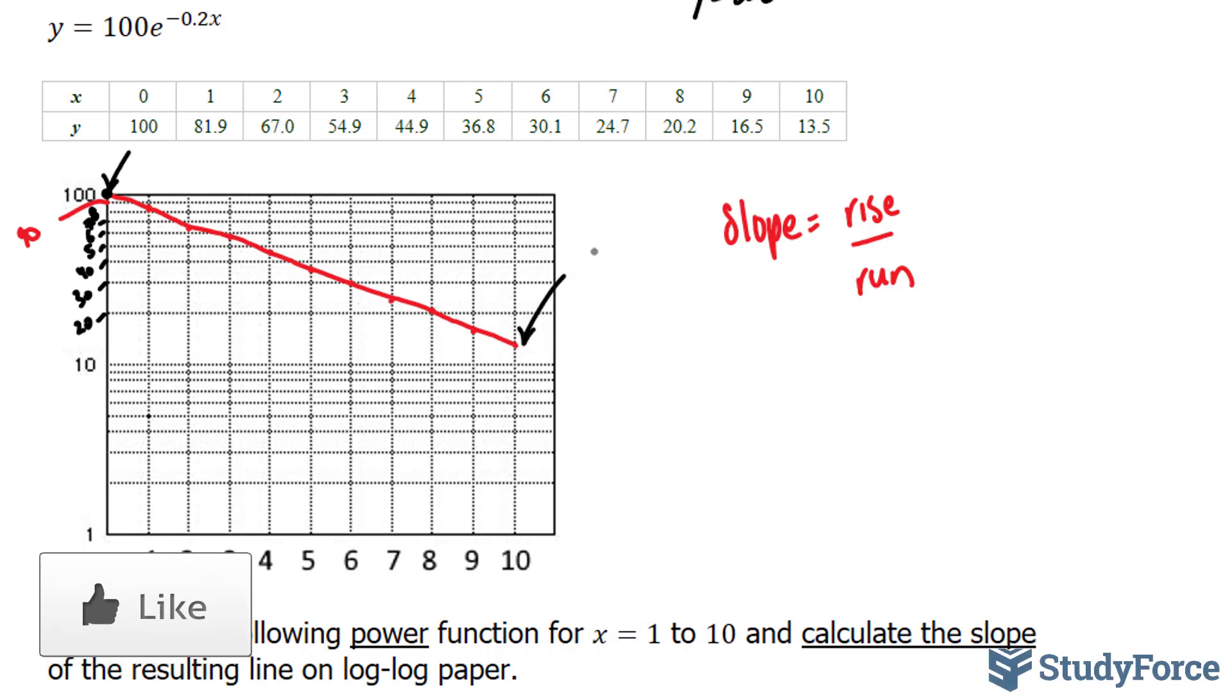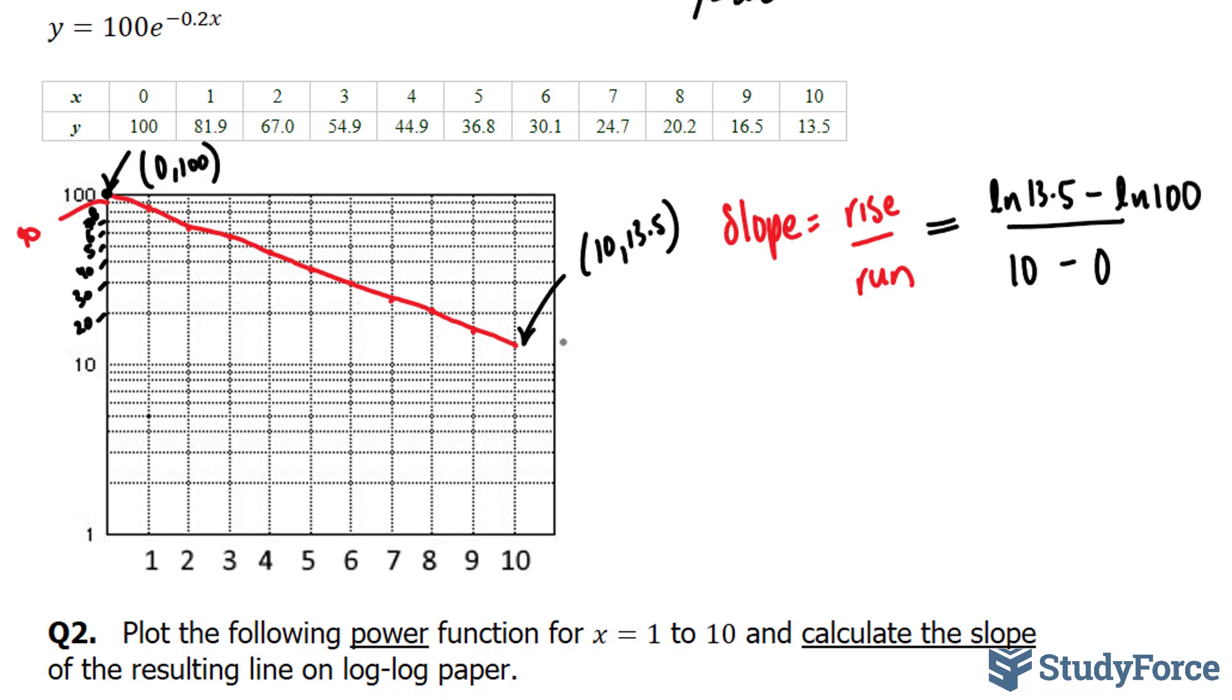This point has the coordinates 10 and 13.5. This point has the coordinates 0 and 100. My run is the distance from here to here. So my run is 10 minus 0. And to find my rise, I have to use the ln of this coordinate minus the ln of this coordinate. So remember, this was my second point. This was my first point.